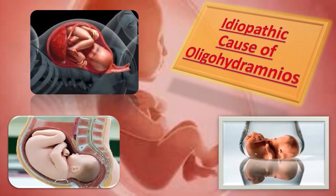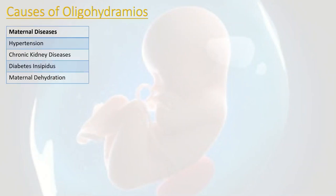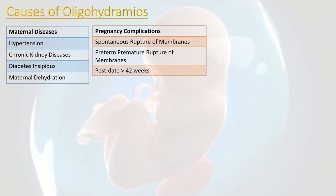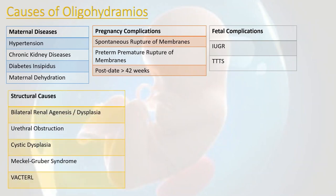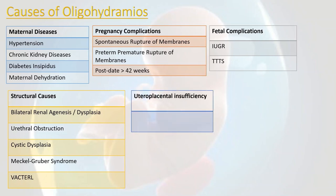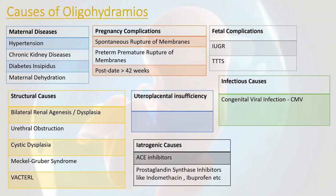To summarize, the complete list of causes of oligohydramnios includes: maternal diseases — hypertension, chronic kidney diseases, diabetes insipidus, maternal dehydration; pregnancy complications — spontaneous rupture of membranes, preterm premature rupture of membranes, post-date pregnancy over 42 weeks; fetal complications — IUGR and TTTS; structural causes — bilateral renal agenesis or dysplasia, urethral obstruction, cystic dysplasia, Meckel-Gruber syndrome, and VACTERL syndrome; uteroplacental insufficiency; infectious causes like CMV; iatrogenic causes like ACE inhibitors and prostaglandin synthase inhibitors like indomethacin and ibuprofen; and idiopathic causes.